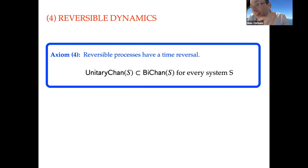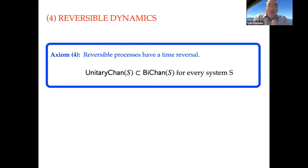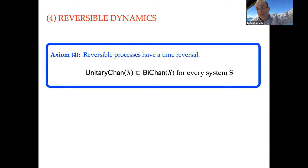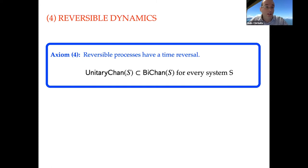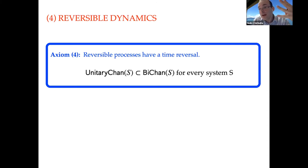The fourth axiom is that reversible dynamics should be bidirectional. This comes from the CPT theorem and fundamental physics: if a process is unitary — an invertible process — it should admit a time reversal in both directions. This was the original intuition from which the whole story started: unitary dynamics is in some sense time reversible. These are the four physical axioms, and I will assume nothing beyond them.